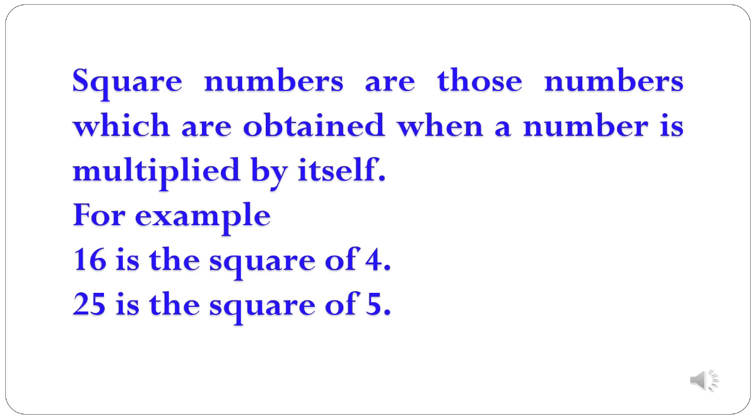Now students, let's define what do we mean by square numbers. Square numbers are those numbers which are obtained when a number is multiplied by itself. For example, we can say that 16 is the square of 4 because 4 multiplied by 4 gives you 16. In the same way 25 is the square of 5.